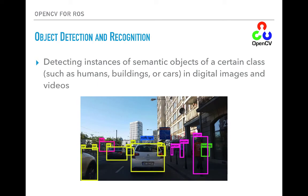With the advances of machine learning and deep neural networks, it is now possible to detect and recognize objects inside an image. This technology has enabled a lot of applications, like autonomous vehicles, which deeply rely on computer vision techniques to observe the world around them.